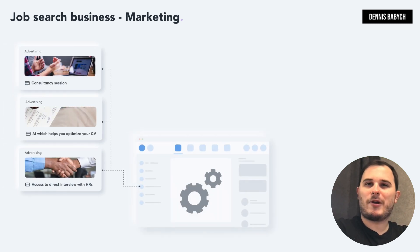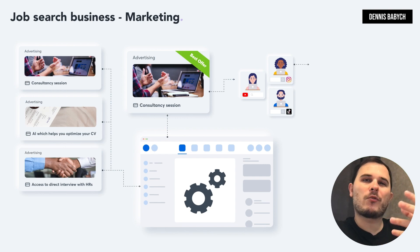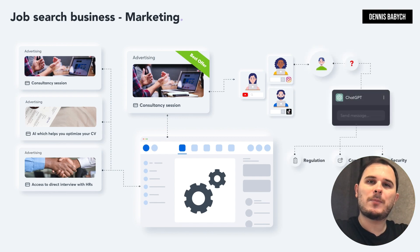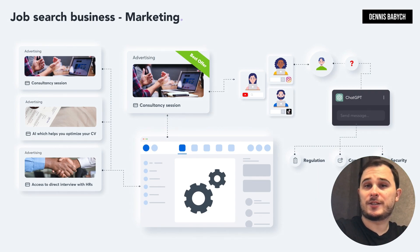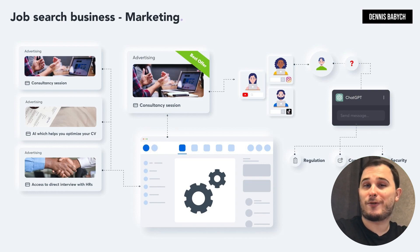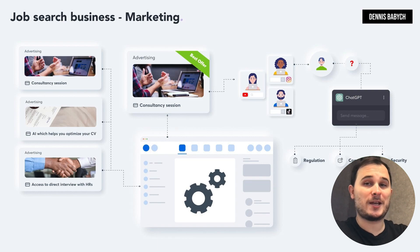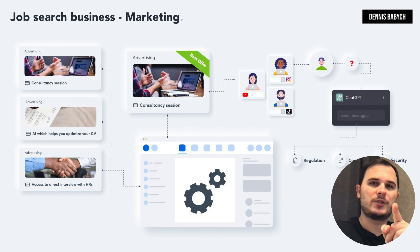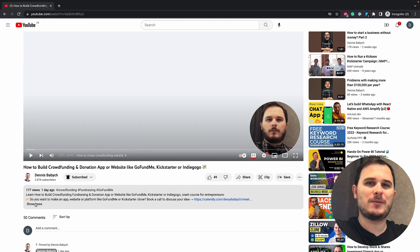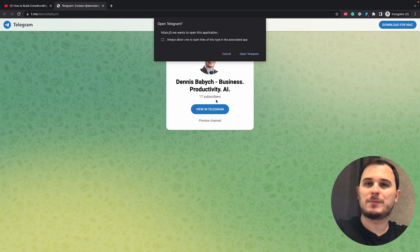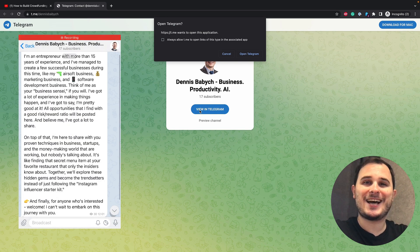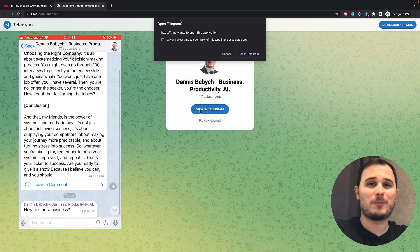Marketing may sound like a challenge, but when you understand your customers' problems and can create a powerful answer, it becomes much simpler. The first step is to create unique and compelling offers that motivate users to try your platform — things like a free career consultancy session, an AI that helps optimize your CV automatically for each job post, or limited access to direct interviews with HR from top companies. Once you have your killer offers ready, broadcast them via social networks like Facebook, Instagram, Google, YouTube, and even TikTok. Identify the most cost-effective channel for user acquisition through testing, and make sure your ads are engaging — nobody enjoys boring ads.